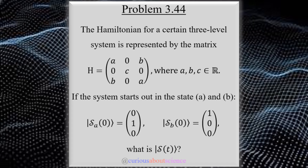This is our first look into how linear algebra — finding eigenstates, eigenvalues, and eigenvectors — is done. This problem states that the Hamiltonian of a three-level system is represented by the matrix H equal to a 0 b / 0 c 0 / b 0 a, so it's symmetric. Be aware of that fact, and where a, b, c are all real numbers.